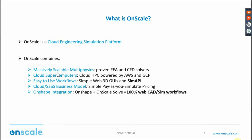The second important aspect of OnScale is our cloud supercomputers. We have cloud HPCs powered by both AWS and GCP — Amazon Web Services and Google Cloud. We are cloud agnostic, which provides redundancy in our software and gives users the flexibility to choose a preferred cloud provider.